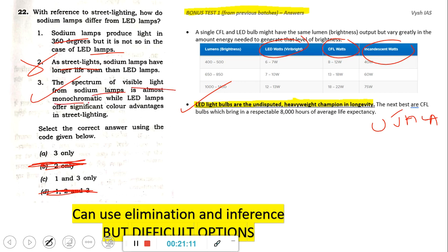That means three is directly true. The spectrum of visible light from sodium lamp is almost monochromatic - meaning single color. You know sodium lamp will be something like yellowish amber color kind of thing. And the LED lamp has color advantage - you know LEDs of every color is there. So that is why that is true. But UPSC will tell you now the problem is one. So sodium lamp produce light in 360 degree but it is not in the case of LED lamp - that is actually true. Answer is one and three only. This is the sure shot answer key. Most students even my students have done three only because they thought LED also can do 360. LED can do only 180 degree.